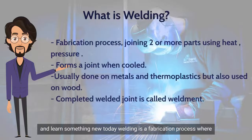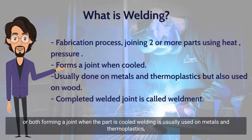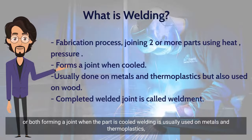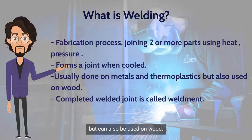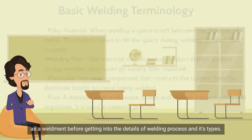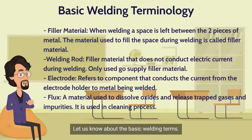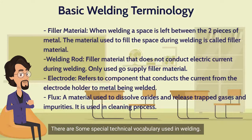Welding is a fabrication process where two or more parts are fused together using heat, pressure, or both, forming a joint when the parts cool. Welding is usually used on metals and thermoplastics but can also be used on wood. The completed welded joint may be referred to as a weldment. Before getting into the details of the welding process and its types, let us know about the basic welding terms — there are some special technical vocabulary used in welding.